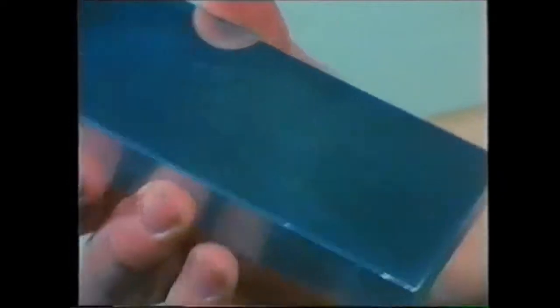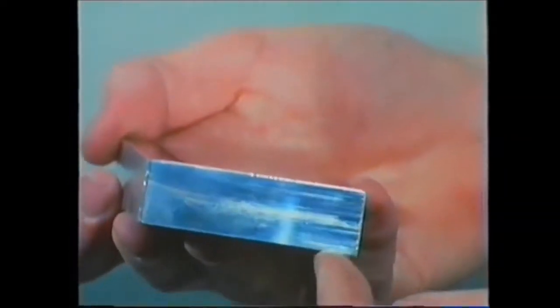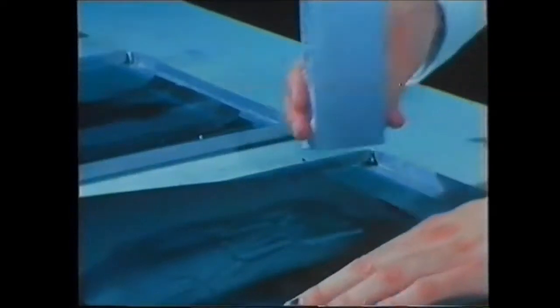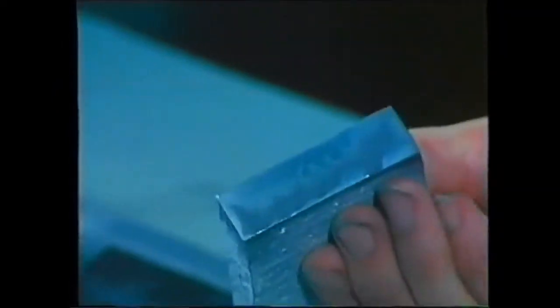In fact, with most metals, including this piece of aluminium, the grains aren't visible, not even on the surface. Here's a way of making them visible. First, we must give the aluminium a mirror-like finish. And there we are.